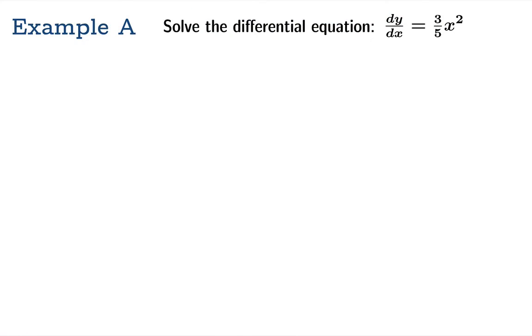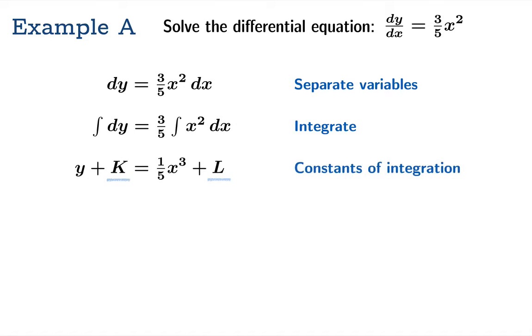Here's our first differential equation: dy/dx equals 3/5 x squared. We can easily separate the variables and integrate - they're polynomials - and we'll get a constant of integration on both sides.